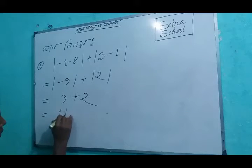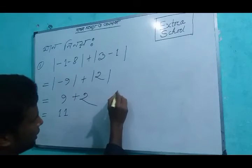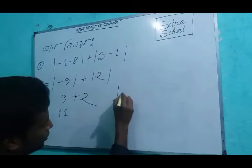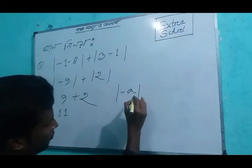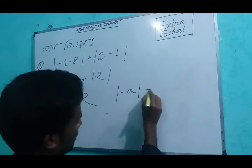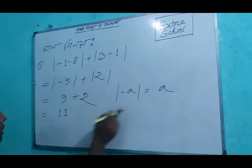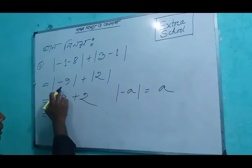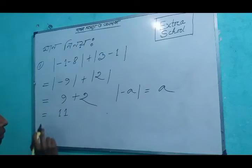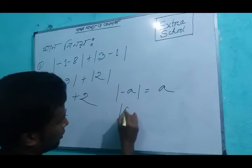The modulus of minus 9, modulus of minus 9 plus 2, modulus of minus 9 is equal to 3. So the result is 33.